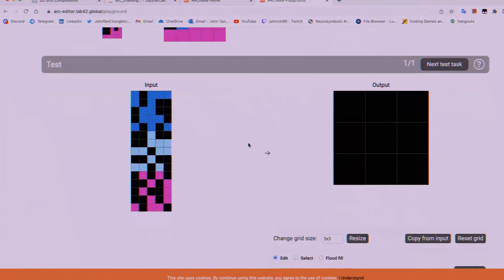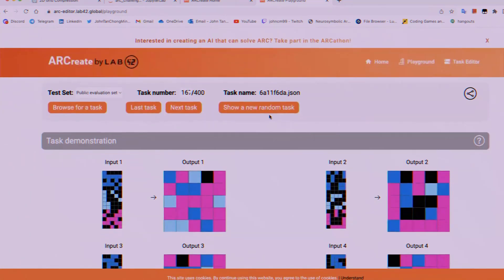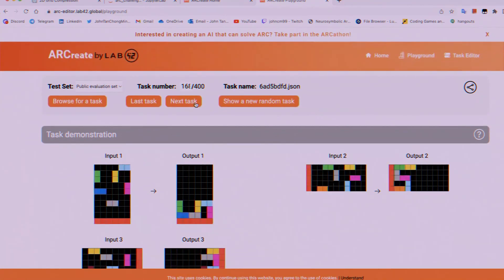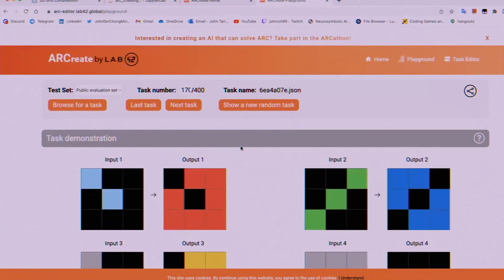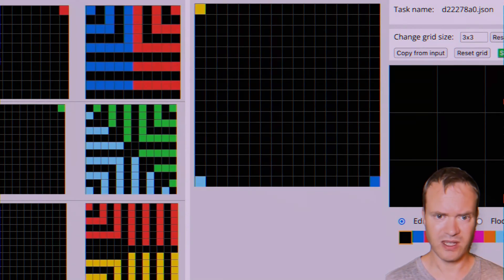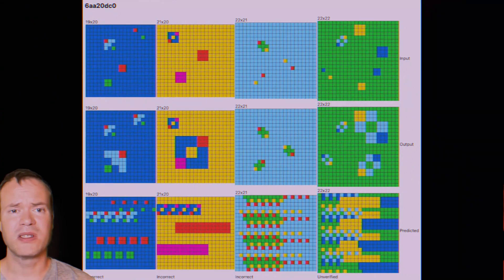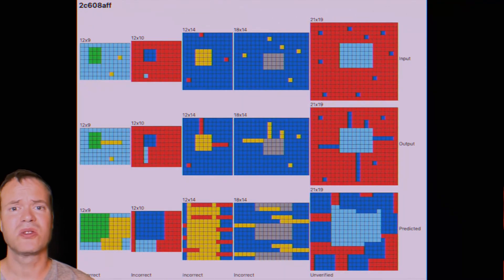The researchers showed the model a few ARC puzzle examples. But this time, the self-edit wasn't about generating facts. It was about generating a strategy. The AI had to decide for itself the entire configuration for its training. Which data augmentation techniques to use to create more practice puzzles? What learning rate to set for its own brain? How many times to practice? The results were, frankly, mind-blowing.